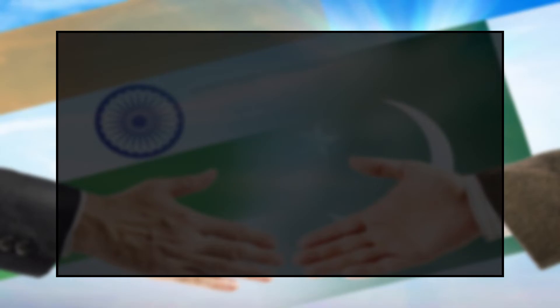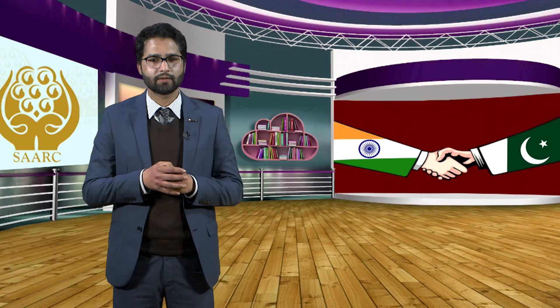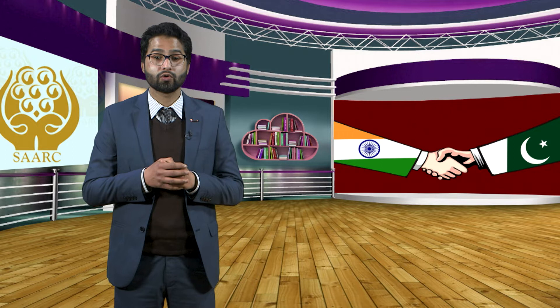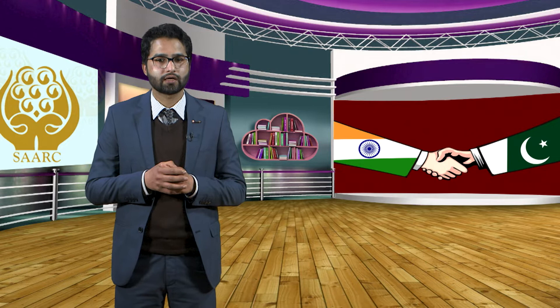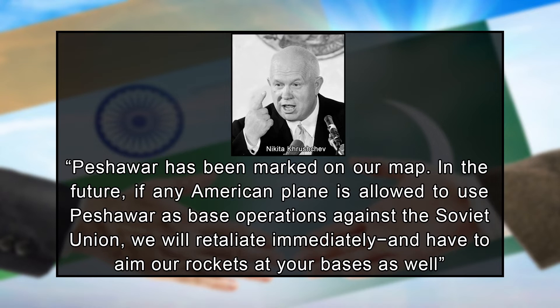Pakistan's move to formally embrace the Western alliance alienated the USSR, which had been taking a neutral position on the Kashmir question at the United Nations. Subsequently, the Soviet Union consistently blocked resolutions on Kashmir. Pakistan further alienated the Soviet Union when President Ayub Khan signed a 10-year lease allowing the strategic base at Peshawar to be used for the USA's U-2 surveillance missions over Soviet territory to locate nuclear and missile sites. Moscow warned Pakistan on May 9, 1960, when Khrushchev bluntly told Pakistan's ambassador Salman Ali: 'Peshawar has been marked on our map. If any American plane is allowed to use Peshawar against the Soviet Union, we will retaliate and aim our rockets at your bases as well.'